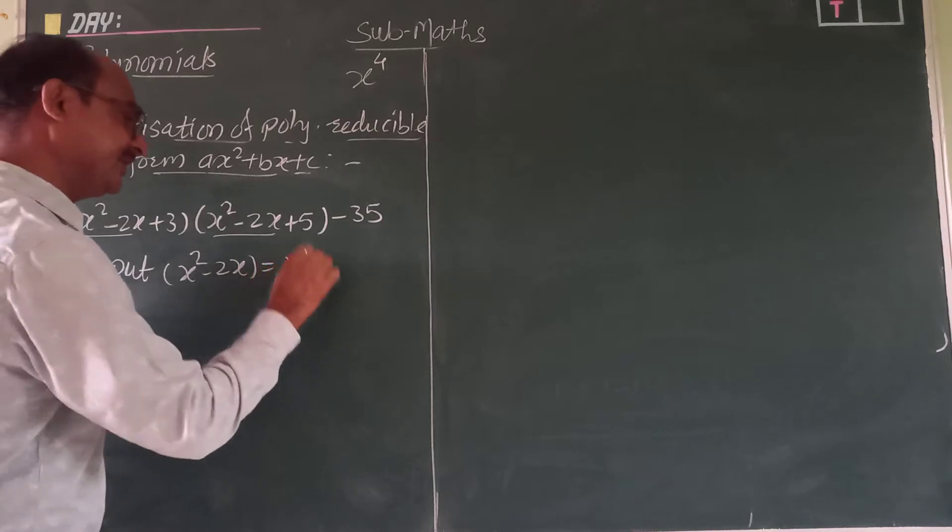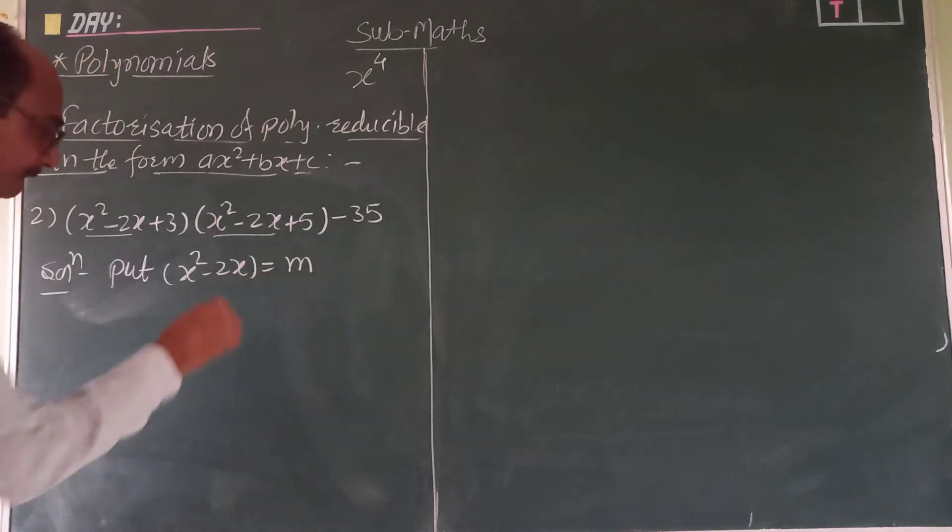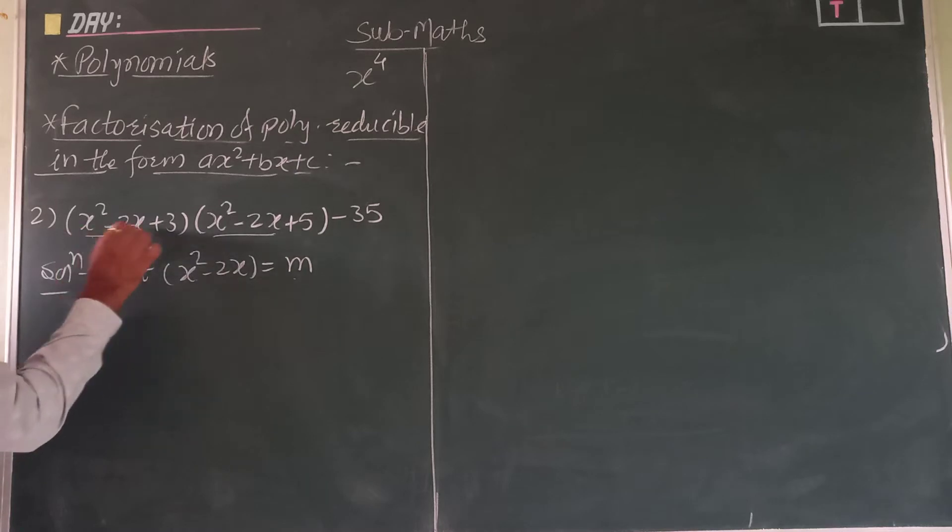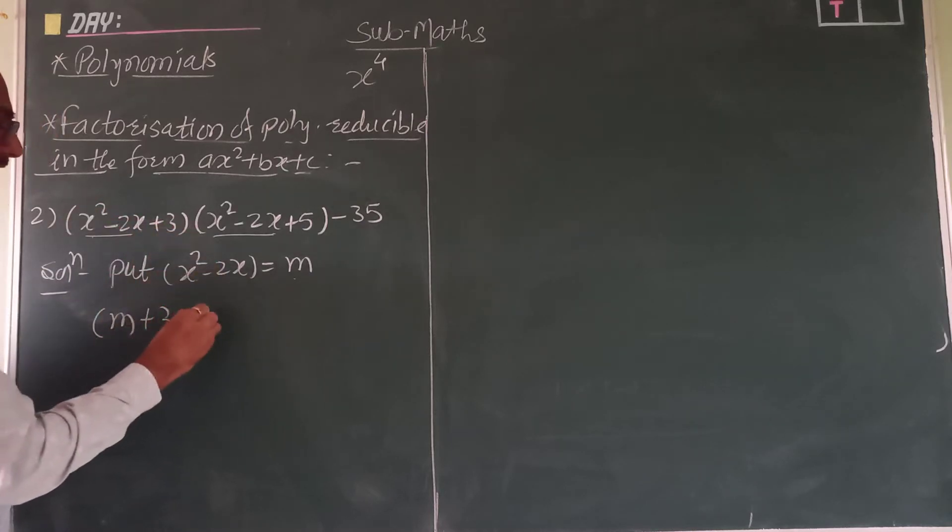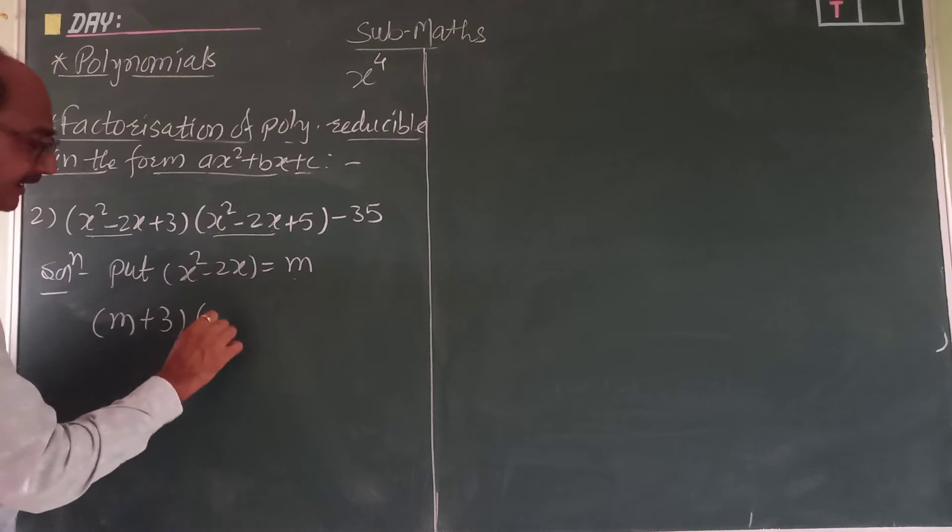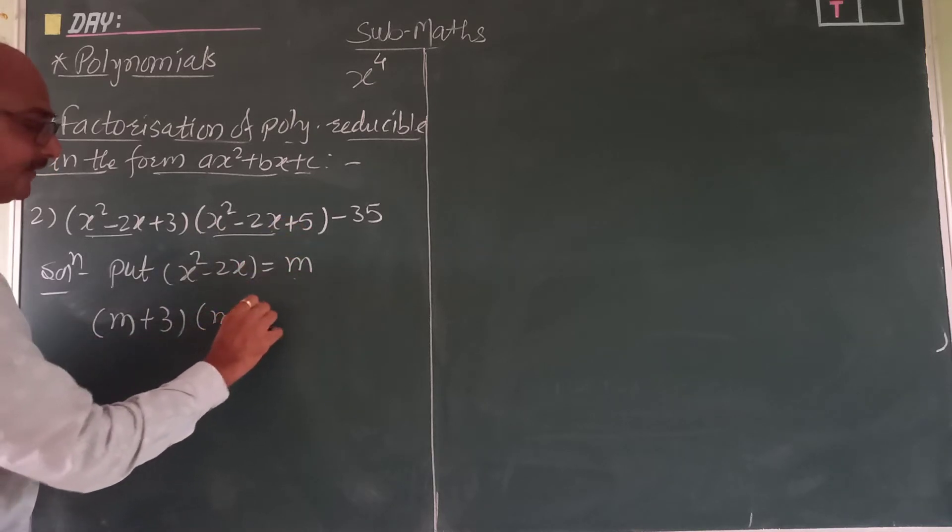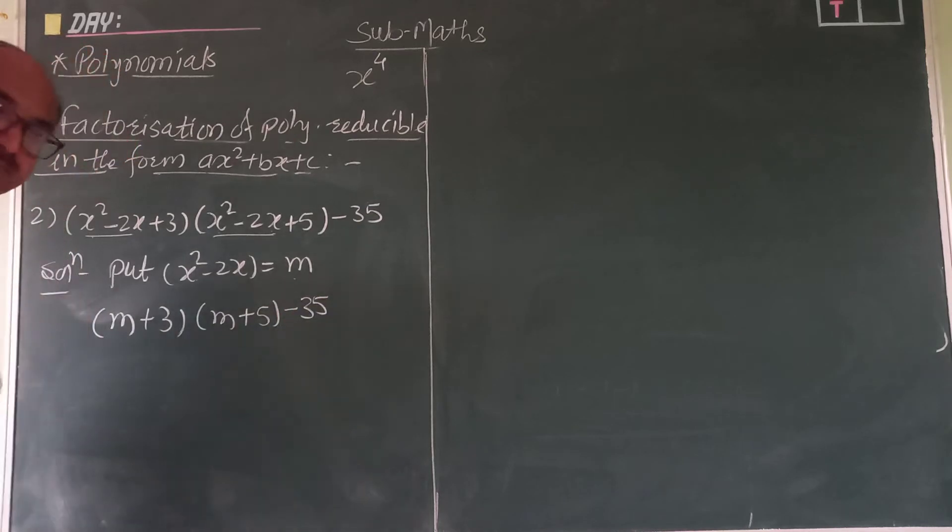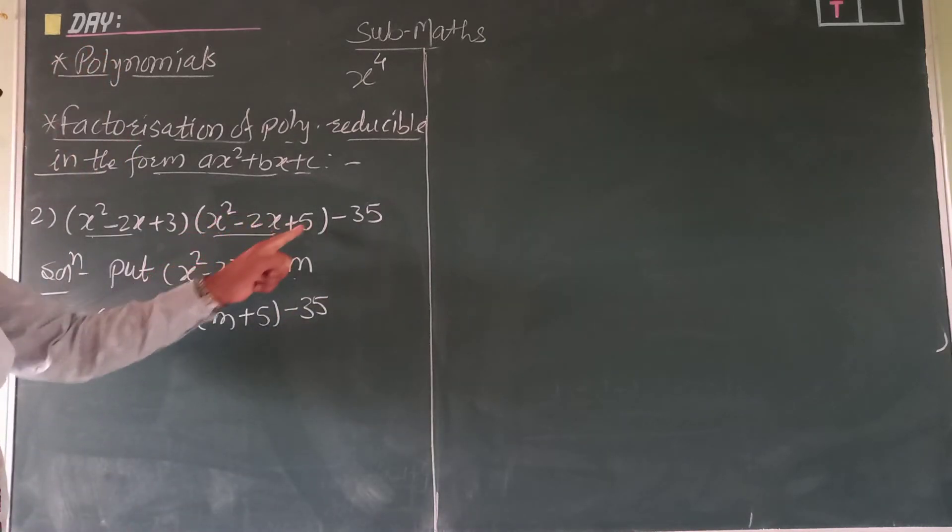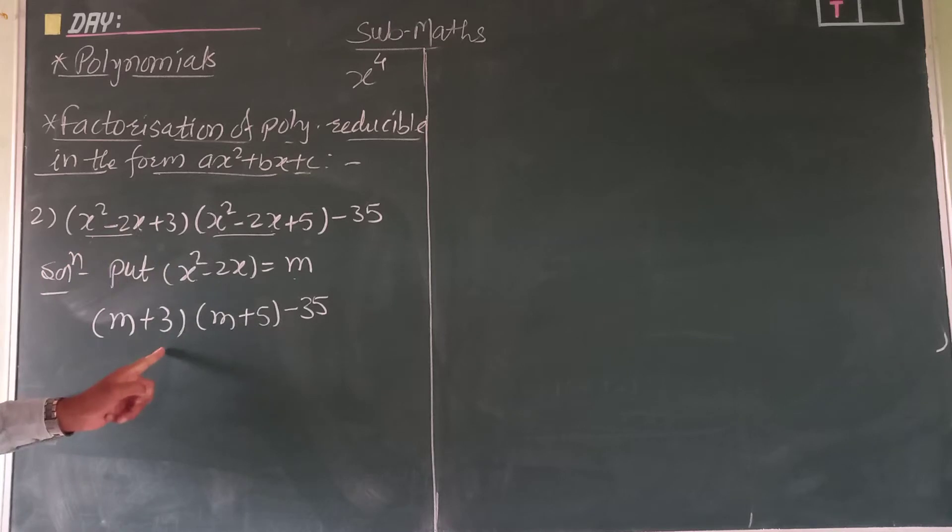to suppose m. Okay, put this value here. Here total, this value is m. Here what remains, plus 3. If the term is there, if not then directly m you have to write. Here this is m plus 5, and here minus 35. Here this is total m plus 5, this is m plus 3, and this minus 35 as well.